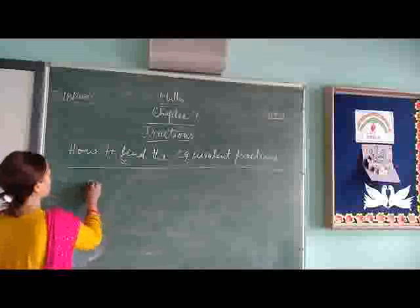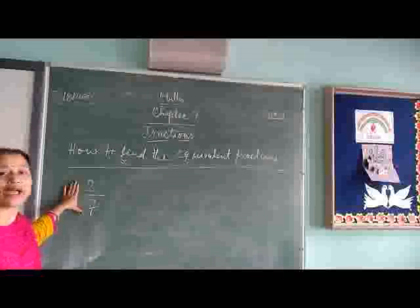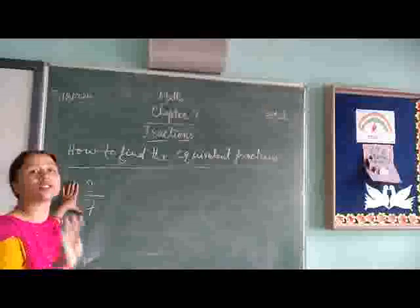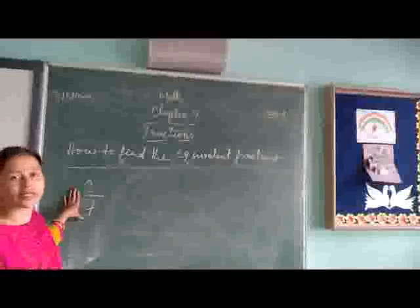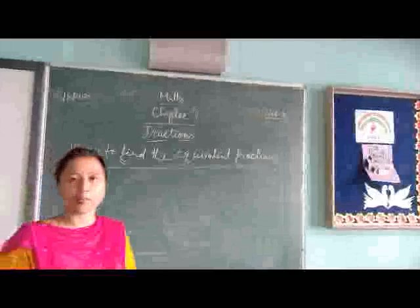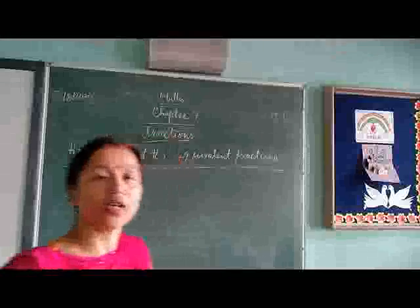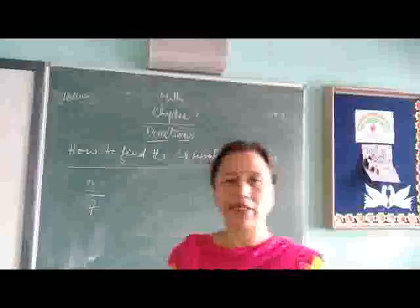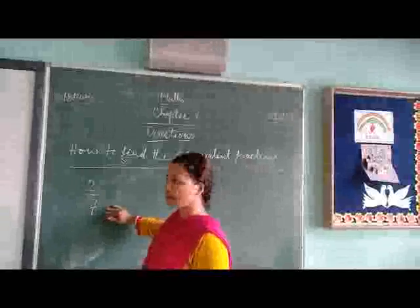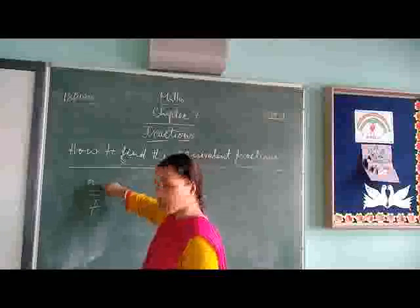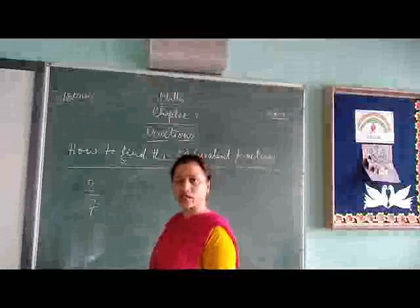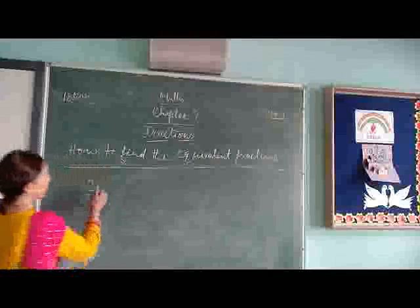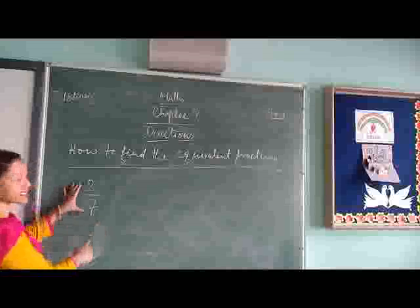We have a fraction here: 2 by 7. So, this has equivalent fractions of the given fraction. How to find it? We multiply or divide by the same number. These are the equivalent fractions. Clear? Focus here. 2 by 7, multiply by 1, will get the same number.